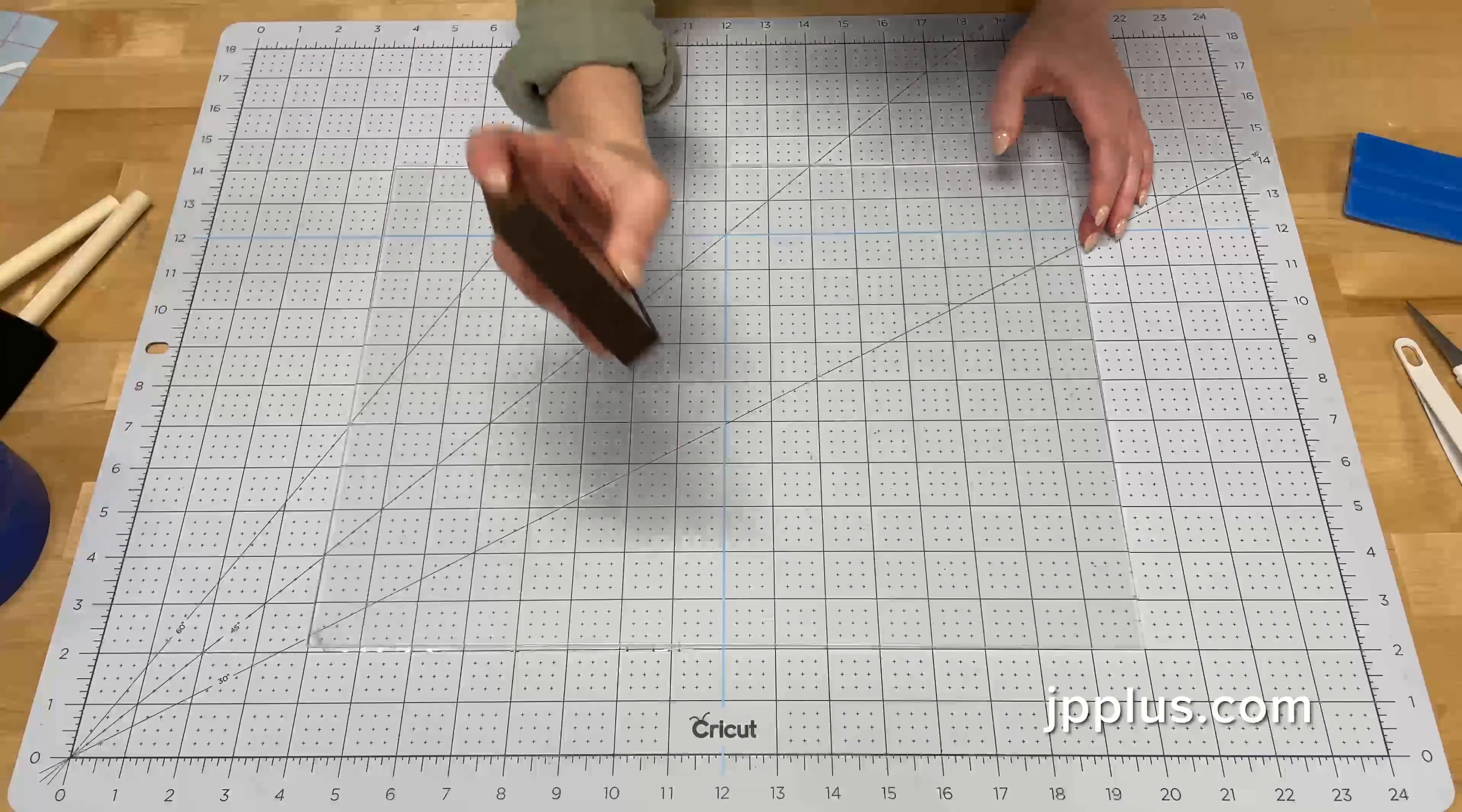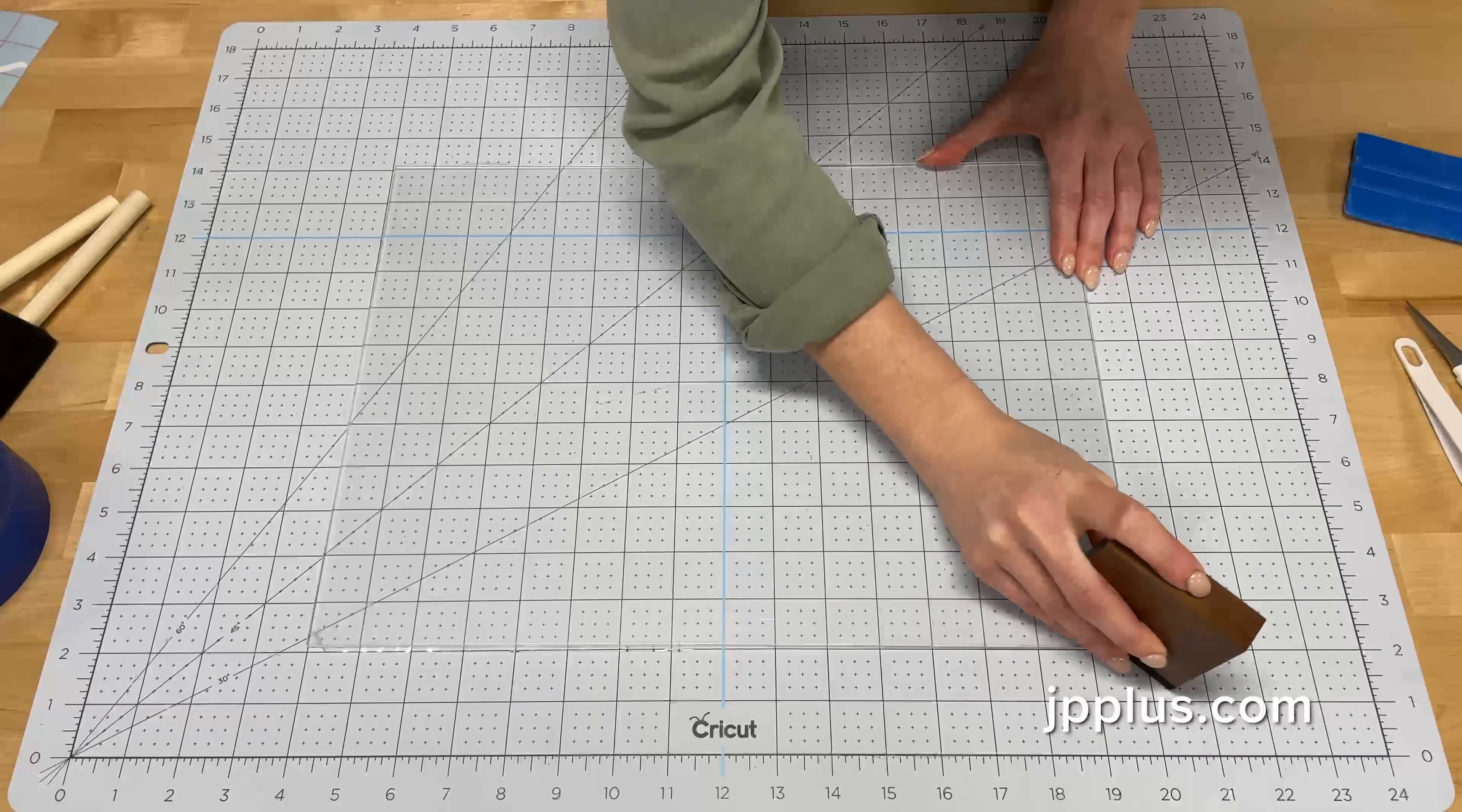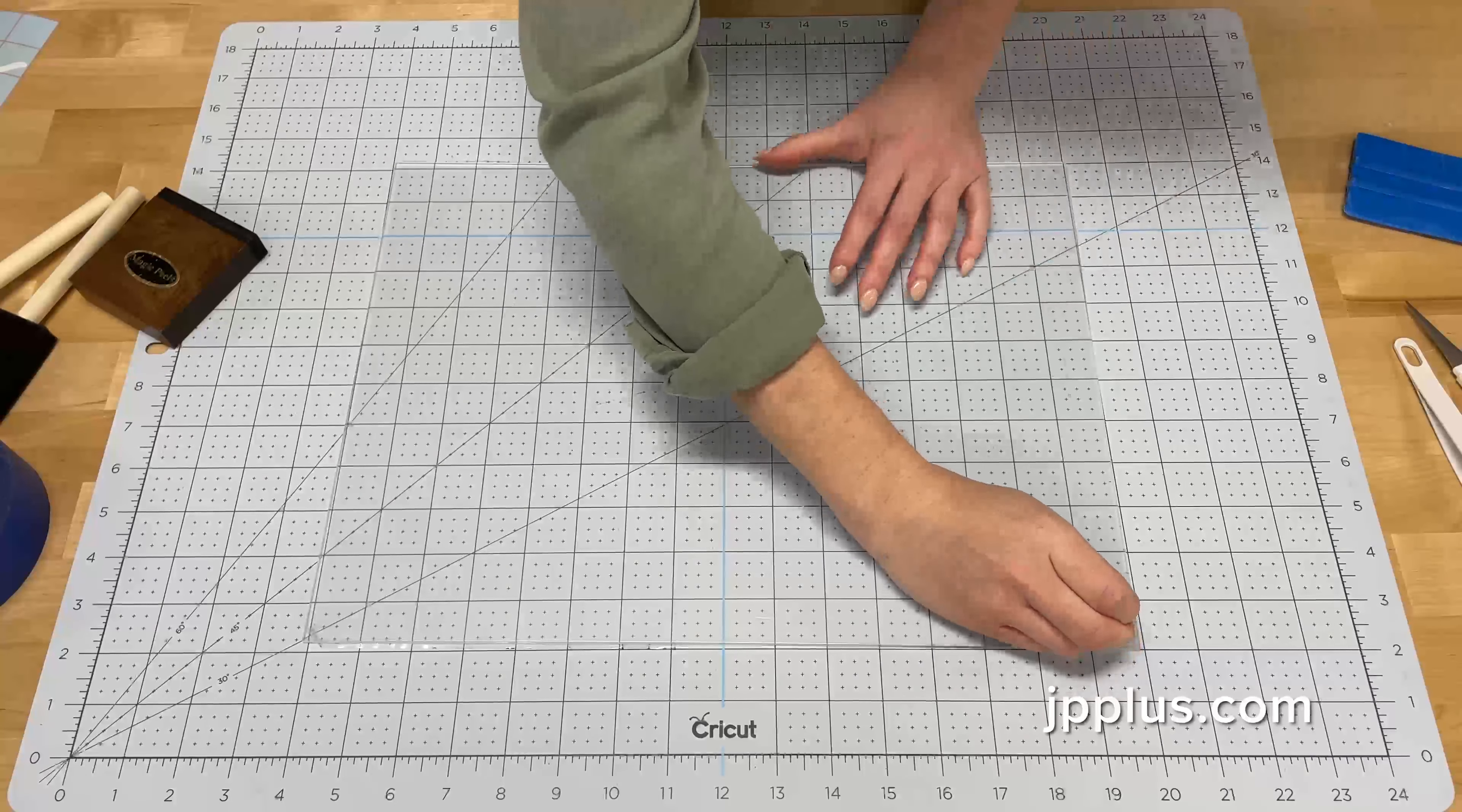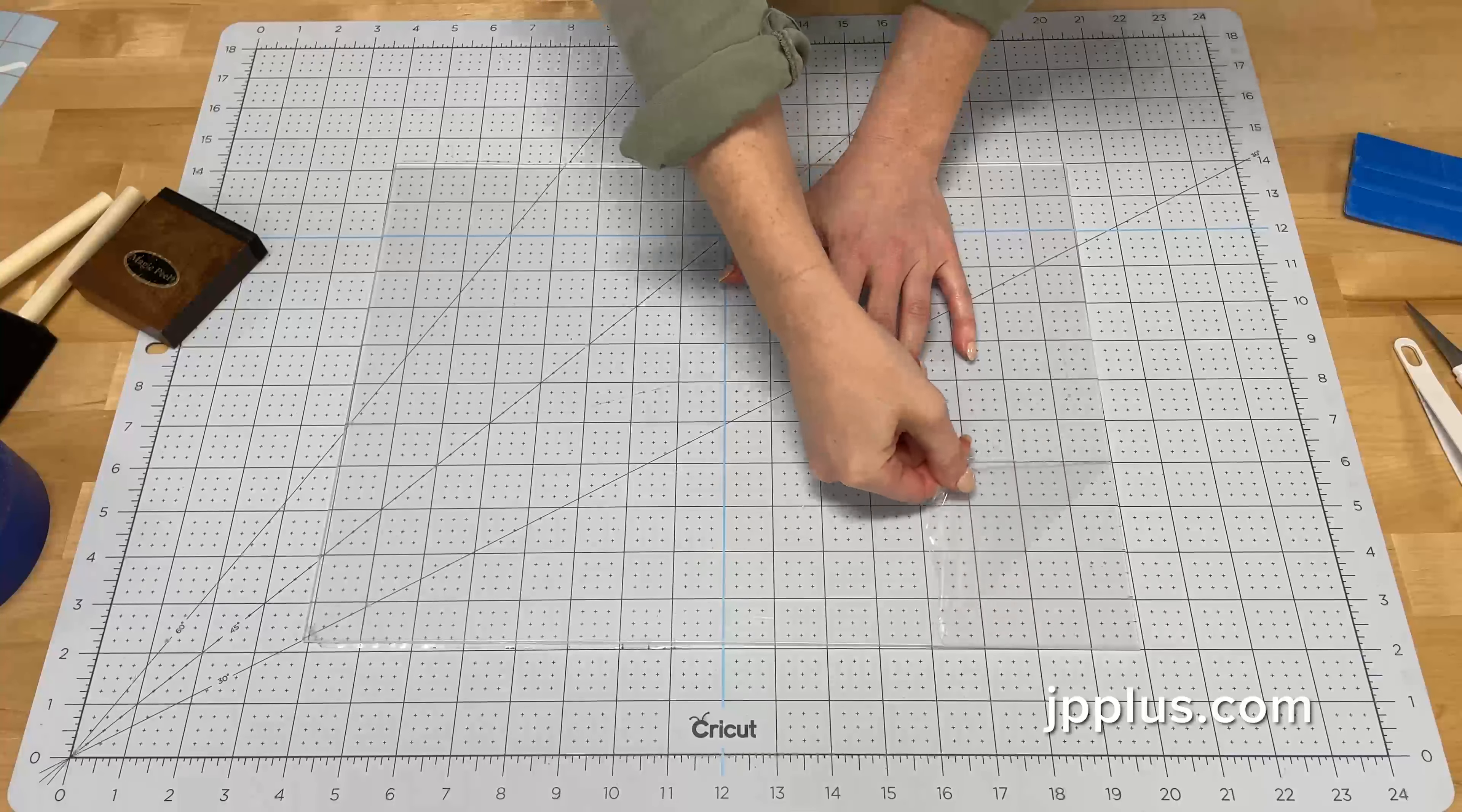So I'm going to start by using my tool to peel up the corner of the masking, the plastic masking. We're only going to peel off one side to start because we want to keep the other side clean for the paint.